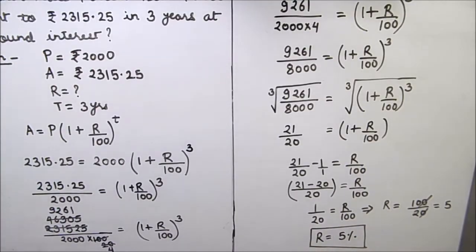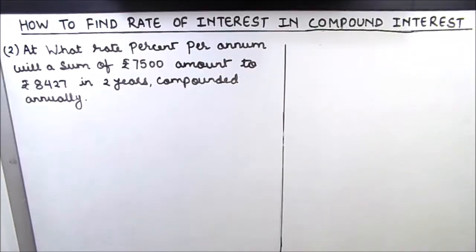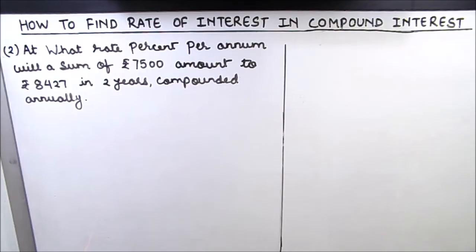That was our first example where we got the rate of interest as 5%. Let us solve one more example to make it clearer. The question is: at what rate percent per annum will a sum of 7500 rupees amount to 8424 rupees in two years, compounded annually? Here too we need to find the rate of compound interest.